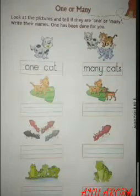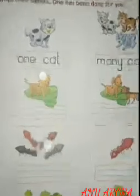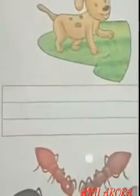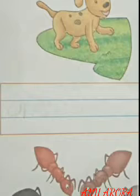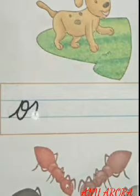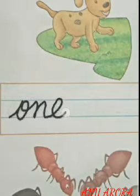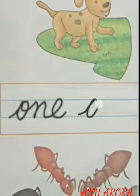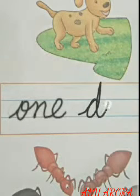Let's start with singular and plural — that is one and many. One dog. O-N-E, one, and D-O-G, dog. One dog.